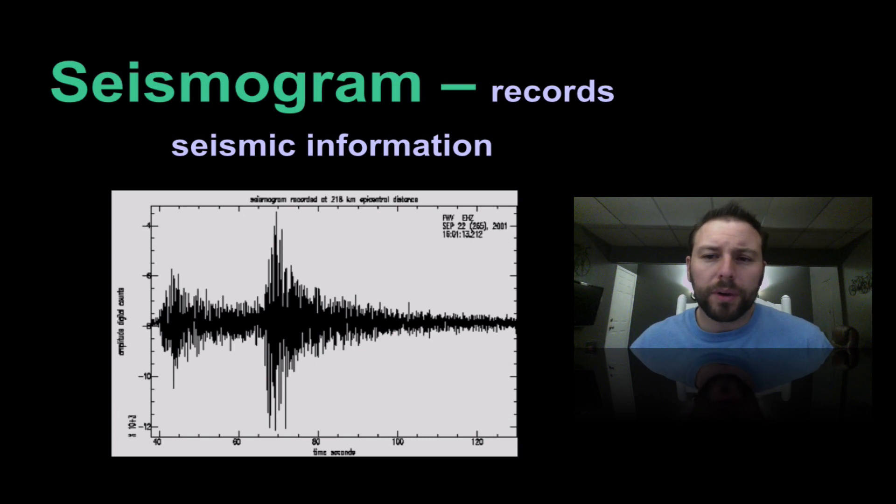When we last left off we were talking about earthquakes, more specifically the anatomy of earthquakes. Some of the tools we use to record information about earthquakes are known as seismograms, or the machines are seismographs. Seismograms can record the size of the earthquake or its magnitude, where it possibly could be, and how fast it's traveling. A number of information can be gathered from what appears to be nothing more than squiggly lines.